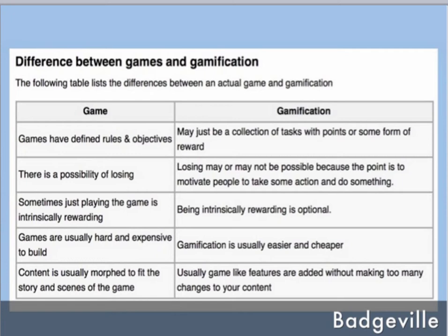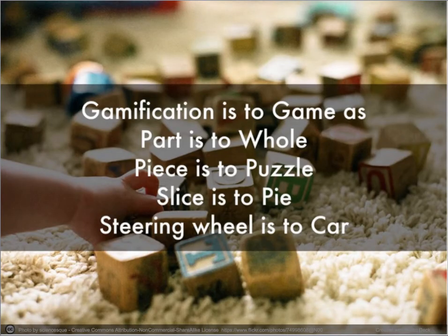You may wonder what is the difference between game and gamification. According to the website Badgeville, the difference is presented in a table. Games have defined rules and objectives, whereas gamification may just be a collection of tasks, reports, or some form of reward, such as Amazon's book review ratings or mileage earned from an airline. Games are more costly to build and gamification is easier and cheaper. In games, content is usually morphed to fit the story and scenes of the game. In gamification, game-like features are added without making too many changes to the content. In short, gamification is to game as parts is to whole, or pieces is to puzzle, or slice is to pie, or steering wheel is to car.